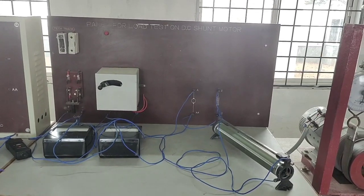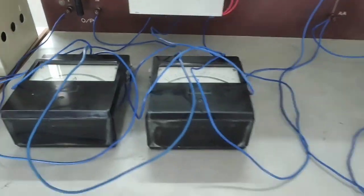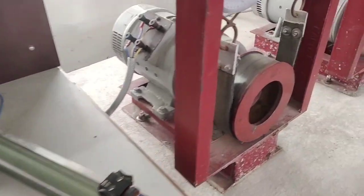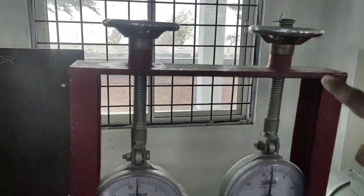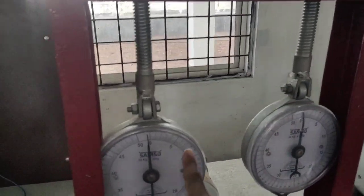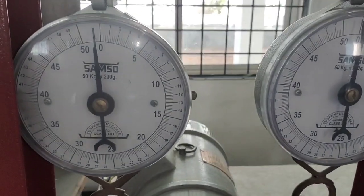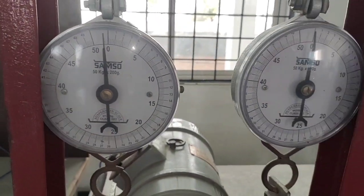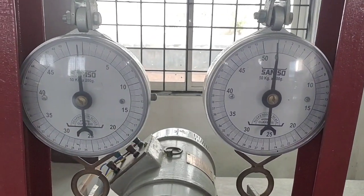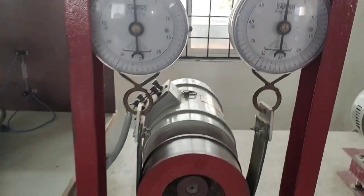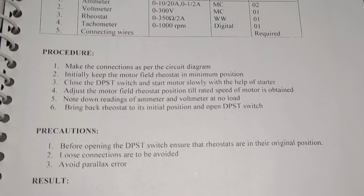This is the panel for load test on the DC motor. This is the DPST switch, fuse, starter, meters, and rheostat. This is the DC motor to which the load is already connected using spring balances — this is S1 and this is S2, and their units are kilograms (kg).